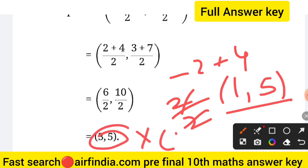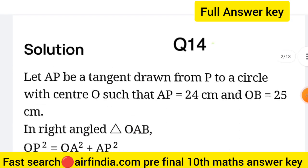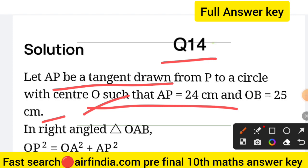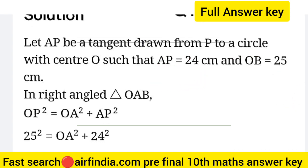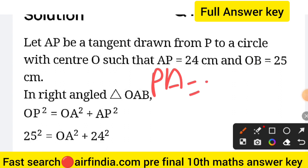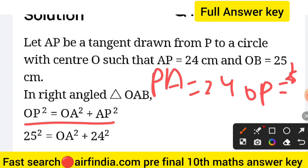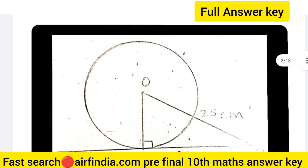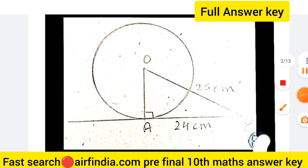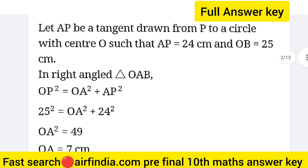The right answer is 1 and 5, not 3 and 5. This is a sample question, so 1 and 5 is your right answer. Question 14: given values are 25 cm and 24, angle are different. You have been given that P is equal to 24 and OP is equal to 25. Your answer is that the radius of the circle is 7 centimeters. Make a diagram because the diagram is most important.